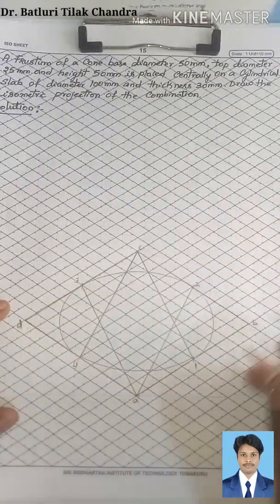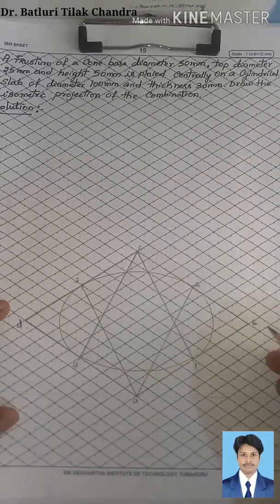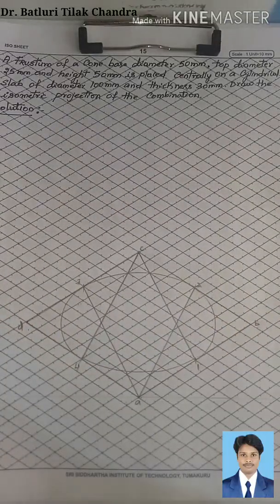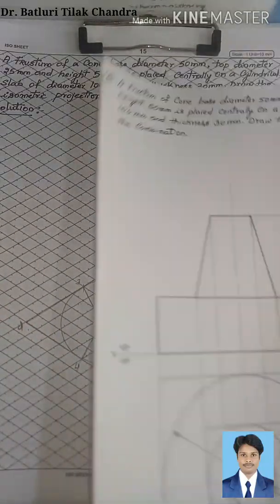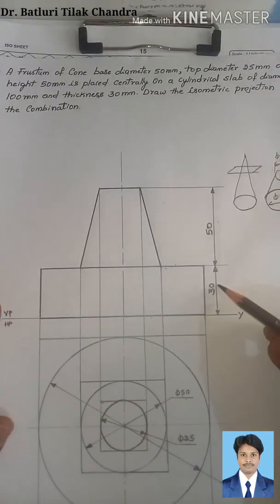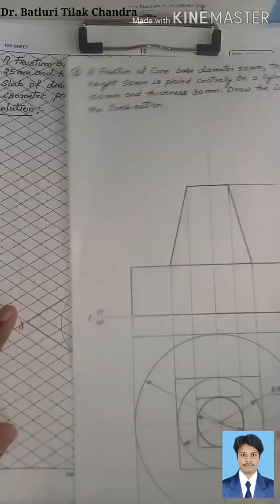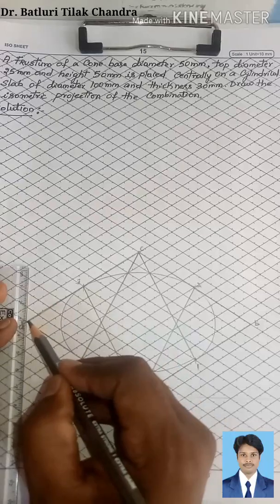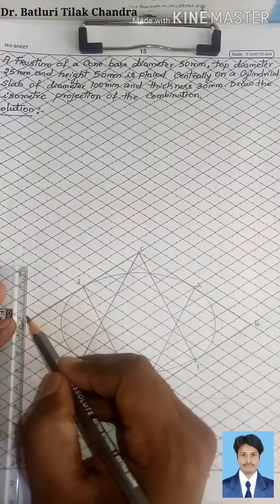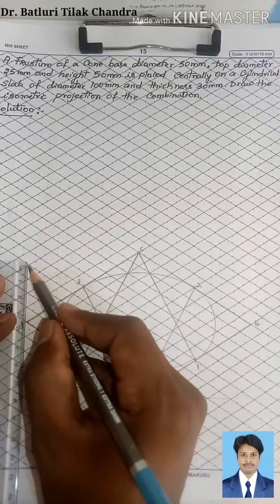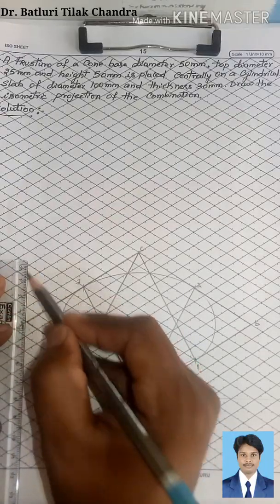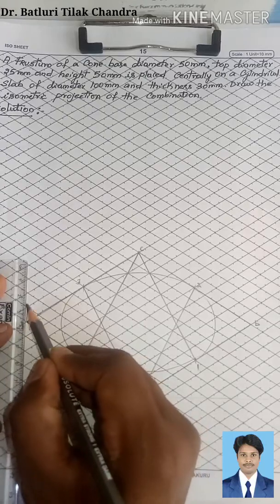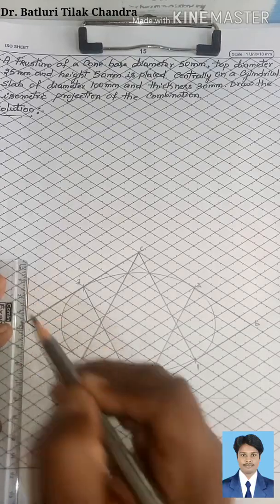I have now constructed the base circle of the cylindrical slab. The height of the cylindrical slab — that is the thickness — is 30 mm, which is a vertical length of 3 boxes. I will count 1, 2, 3 from each relevant point.